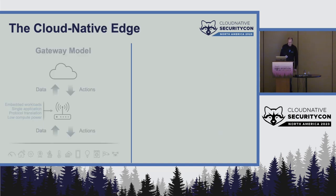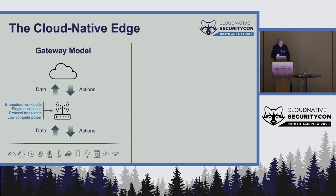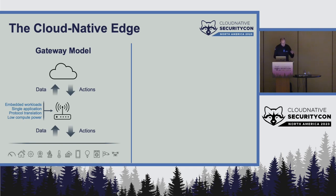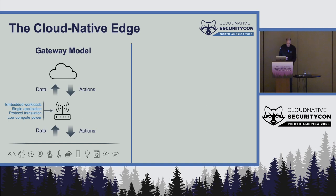Let's begin with the cloud-native edge. Edge computing nodes were traditionally gateways. In an IoT application, a gateway sits between endpoint devices — typically non-IP devices — and talks over local protocols like Bluetooth, Zigbee, Modbus. A gateway gathers data from endpoint devices and delivers actions over those same protocols, while also being an IP-capable device that can talk to services in the cloud. Compute workloads on gateways tend to be embedded, tightly hardware-integrated, singular of purpose, flashed in the factory, doing things like protocol translation with quite modest compute power.